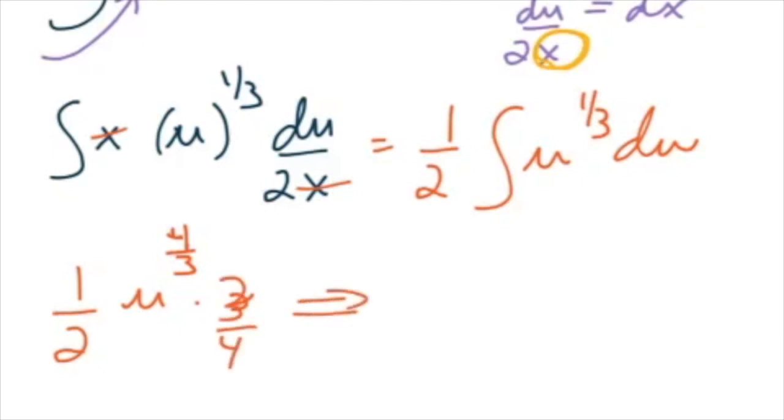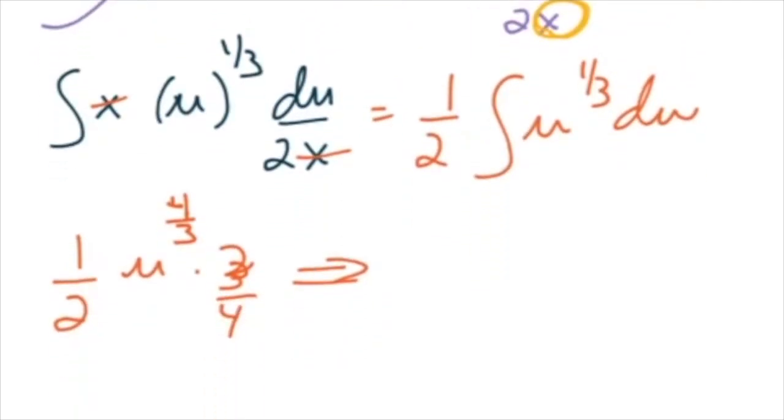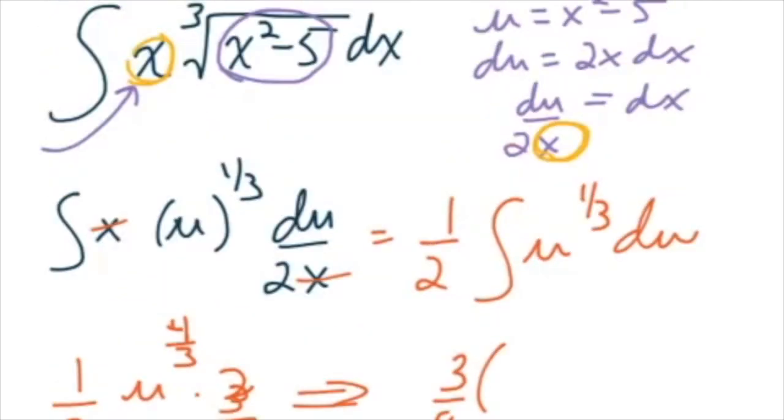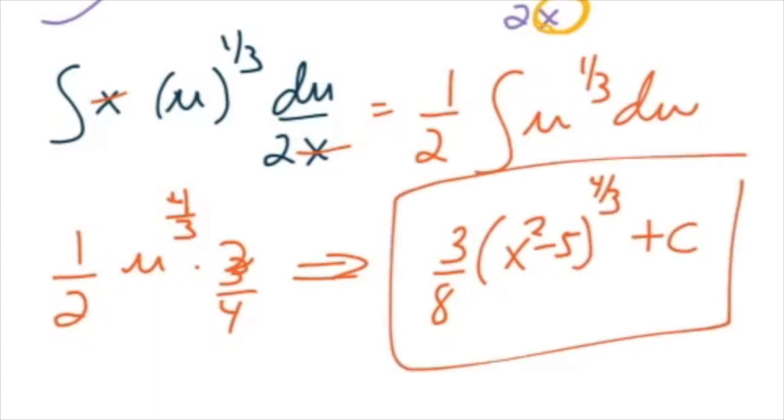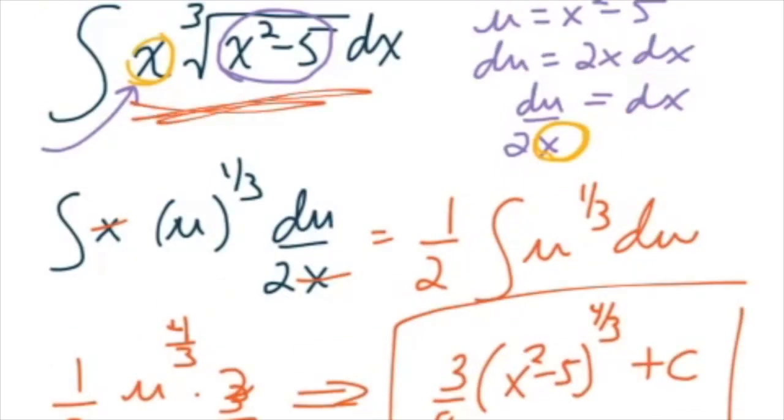So I pump up the power. 1 third becomes a 4 thirds. Then, of course, when you divide by 4 thirds, it's like multiplying by 3 fourths. And then, of course, you can't leave things in u because you started with x's. So you start with x's, end with x's. So I get 3 eighths. And then I'm looking at x squared minus 5 raised to the 4 thirds power plus c. And there you go. And that is the antiderivative of x times the cube root of x squared minus 5.